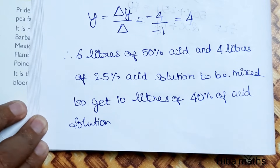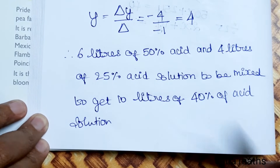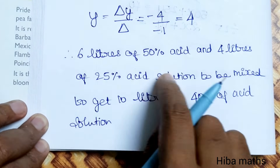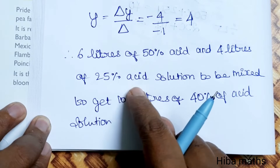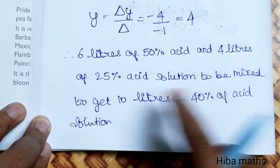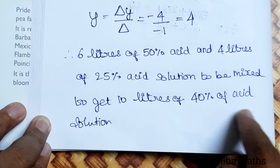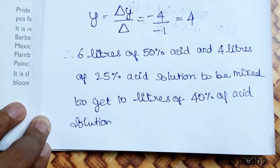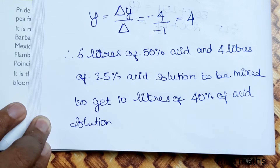Statement: 6 liters of 50% acid and 4 liters of 25% acid solution should be mixed to get 10 liters of 40% acid solution. That is the answer for this question. Thank you so much for watching.